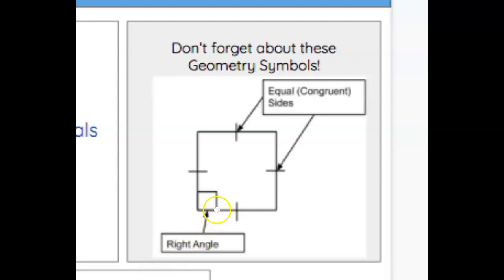The first symbol is this little box. We put this little box in angles that are right angles. The next symbol I want to mention are these little dashes, these lines. These lines mean that the lines that they lay on are congruent or that they're equal. We use these symbols in case we don't have rulers or protractors to actually measure them.